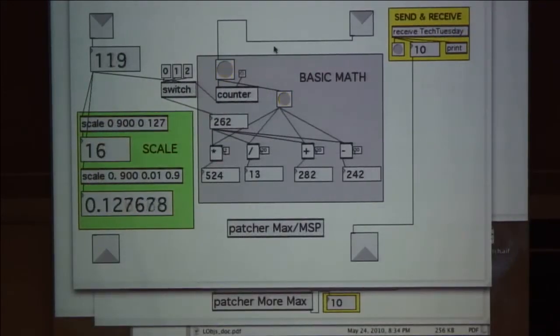That's doing some math on the right side and on the left side. There's a scale object. Scale is also pretty helpful. It allows you to take a string of numbers, a range of numbers, and then scale that to what you might find useful. Right now I'm taking 0 to 900. On the first one I'm scaling it between 0 and 127. And then the second one I'm going from 0 to 900, scaling it from .01 to .9. 0 to 127 is useful for sliders. 0 to .9 or to 1 is useful for other things. So that just helps you get a range of numbers that's useful to you.